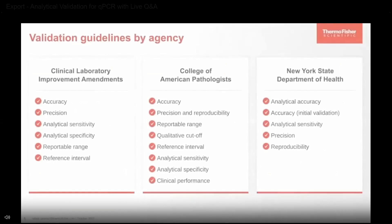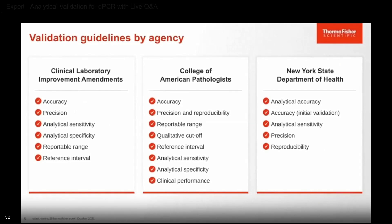Let's line up each accrediting agency and talk about their specific guidelines. From CLIA, they cover all the high-complexity laboratory experiments that need to be covered in a validation: accuracy, precision, analytical sensitivity, specificity, reportable range, and interval.